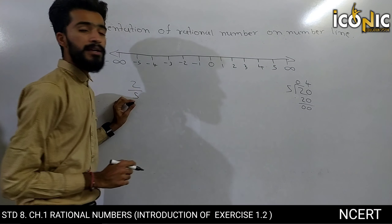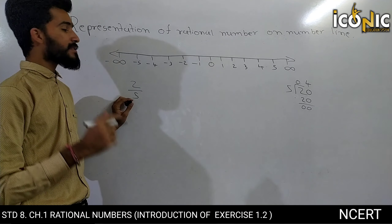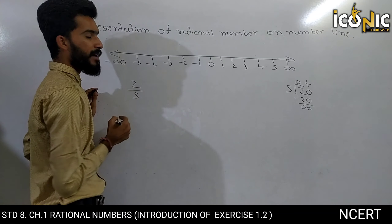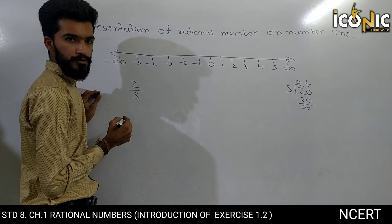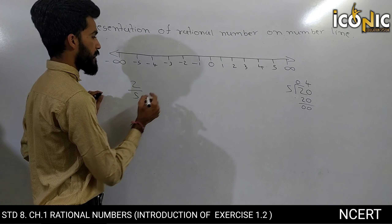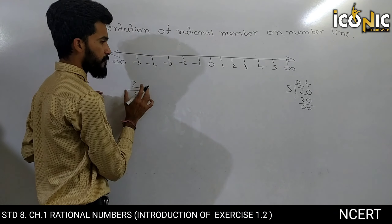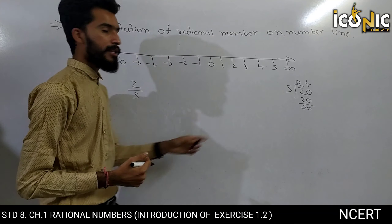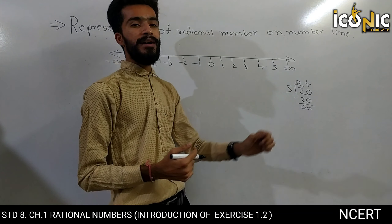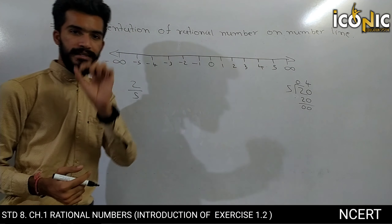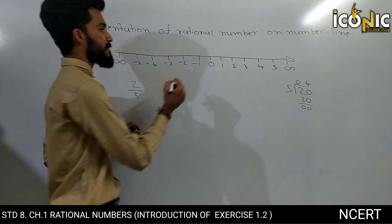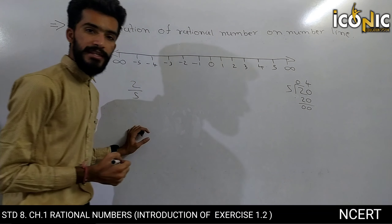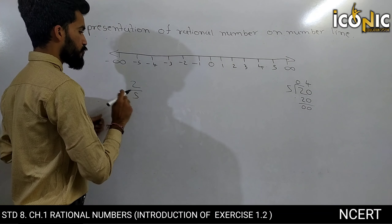Zero aur one ke beech mein. Toh dekhte hain kaise. Suppose two divided by five, uska meaning kya hai? Yahi woh - one se chhoti value, zero point four answer hai, one se chhoti value - yahi woh, zero aur one ke beech mein hoga.